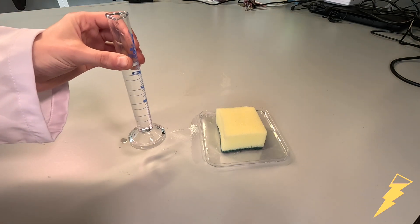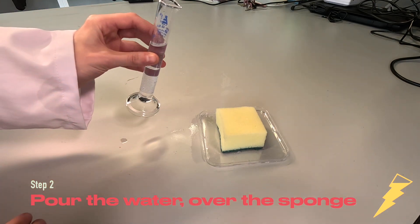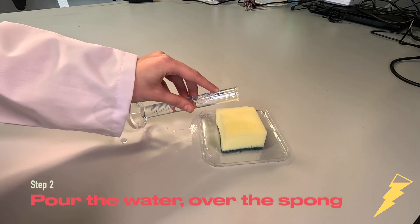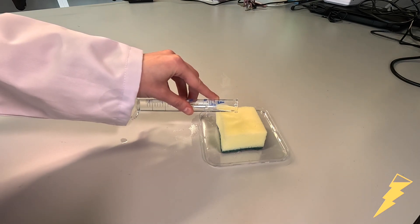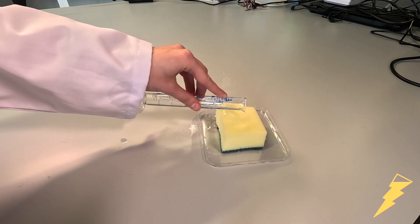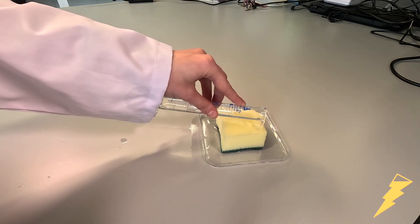So we're going to put our sponge on the petri dish, take our water and pour it over the top of our sponge. The goal of this is to see how much water the sponge can absorb.